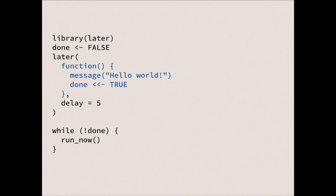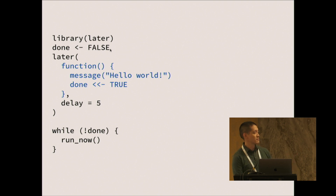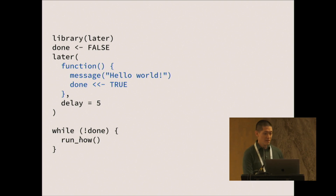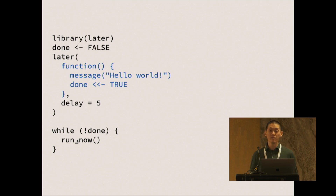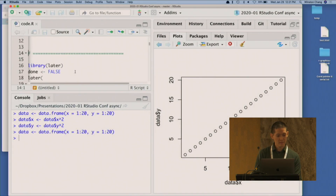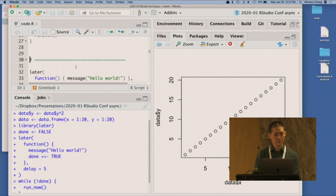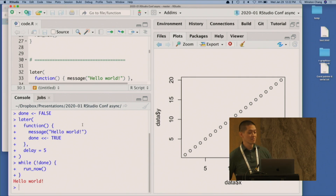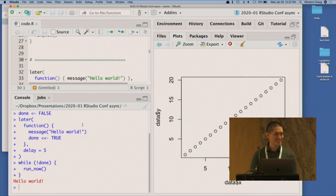You load the Later package. I'm setting a flag to signal when something is done. Then I say 'later, run this function — which prints out a message and updates the flag — after five seconds.' At the end, I say while I'm not done, run now — meaning keep running the functions that are in this event loop queue. You won't be surprised to see that after five seconds it prints out 'hello world.' This part is not really that difficult.